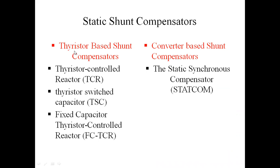Static Shunt Compensators are classified into two categories. One is Thyristor-based Shunt Compensator. The second one is Converter-based Shunt Compensator. Thyristor-based Shunt Compensators are classified into three categories: TCR, TSC, and FC-TCR. TCR is Thyristor Controlled Reactor, TSC is Thyristor Switched Capacitor, and FC-TCR means Fixed Capacitor Thyristor Controlled Reactor.